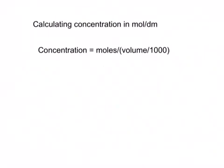You may be asked to calculate the concentration in moles per decimeter cubed. I'm going to give you an example. There is an equation you need to use, which is concentration equals moles divided by volume divided by 1000. We divide by 1000 because you're usually given that volume in centimeters cubed, and you need to convert it into decimeters cubed. To do that, you divide by 1000.